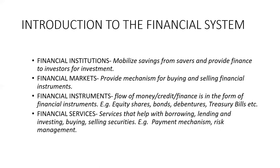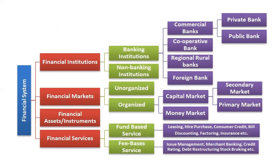Another component is financial services — these are services which help in the functioning of the financial system. The payment and settlement mechanism provided by banks is one example. Financial services are again provided by financial institutions. A diagram gives an overview of the constituents and components of the financial system, which include financial institutions, financial markets, financial assets, financial services, and also regulators.